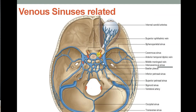The venous sinuses related to the diaphragma sellae are the anterior intercavernous sinus and posterior intercavernous sinus, both draining into the cavernous sinus, which is the paired sinus present laterally on the body of the sphenoid bone.